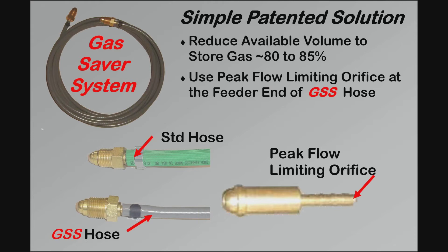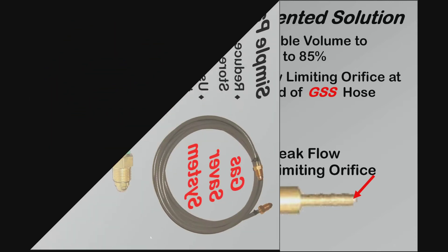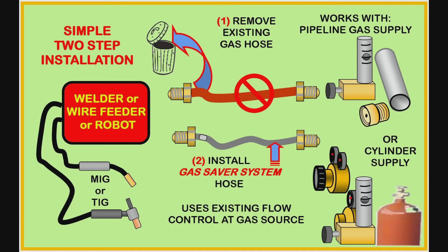It also adds to the amount of gas savings. Our patented Gas Saver System is very simple to use — it just replaces the existing gas delivery hose from the gas flow control to the welder or wire feeder. It works with any existing quality flow control device and has no moving parts to wear or knobs to adjust.